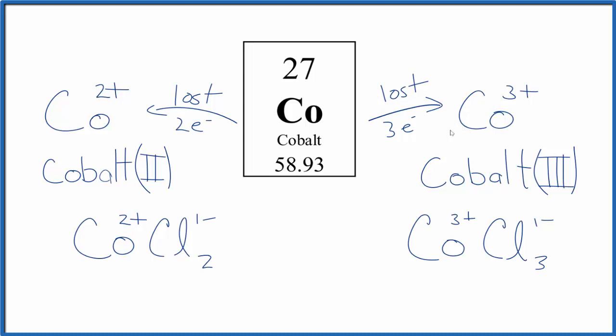Note that we could lose more than three. It's just that these are the more common ions that form when cobalt loses electrons to form ions.